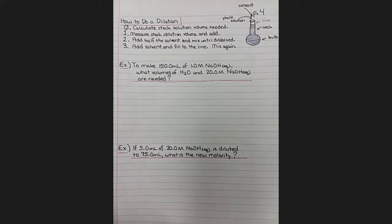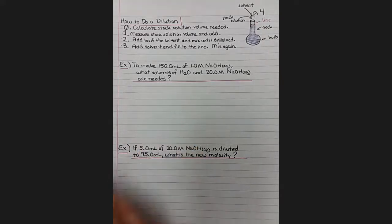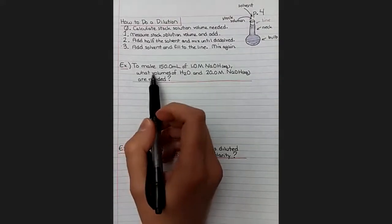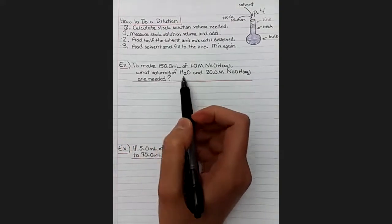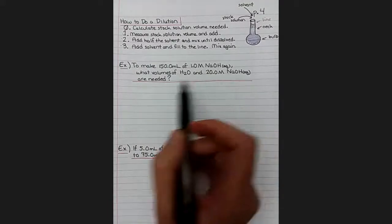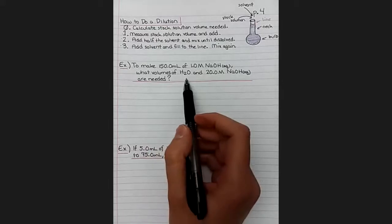So now that we know how to physically do that, let's look at a couple of example problems and practice our M1V1 skills. So this problem says to make 150 milliliters of one molar sodium hydroxide solution, that's what the aqueous means, what volumes of water and 20 molar sodium hydroxide are needed.